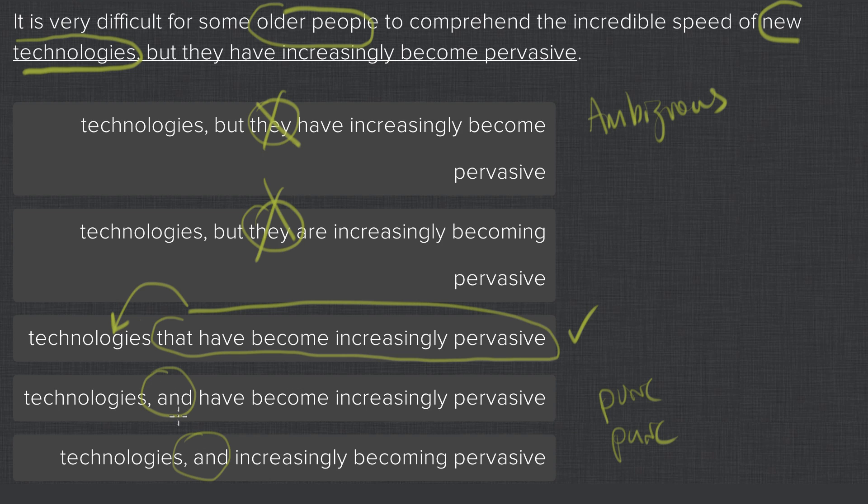It's possible that this conjunction is semi-correct, but it would be wrong for another reason, which is since there's no subject after the conjunction, we have 'have become.' This 'have become' needs to refer back to the original subject, which is older people.